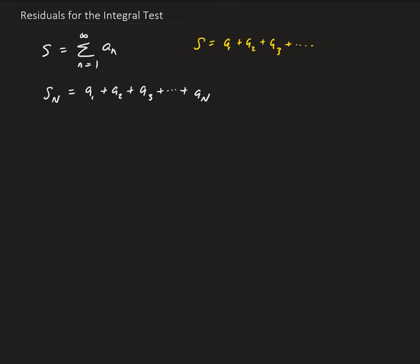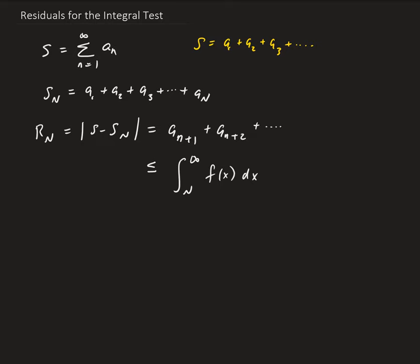The difference between S and S of n is called the residual — we call this R of n. So when we take the difference between S and S of n, we're left with the A sub (n+1) term plus A sub (n+2) term and so on. These are called the residuals, and it can be shown that these are going to be less than or equal to the integral from n to infinity of whatever the corresponding function is for that series.